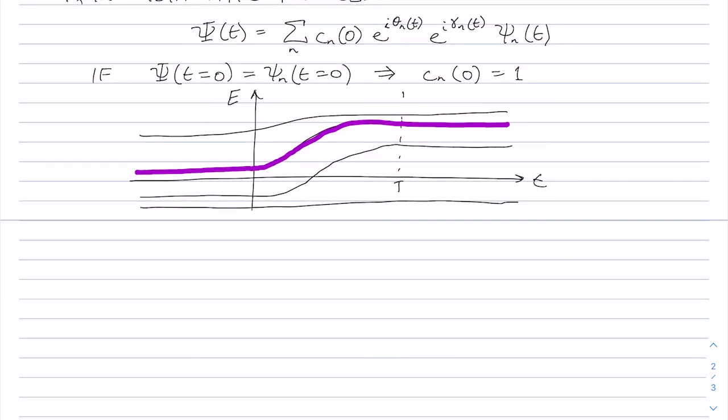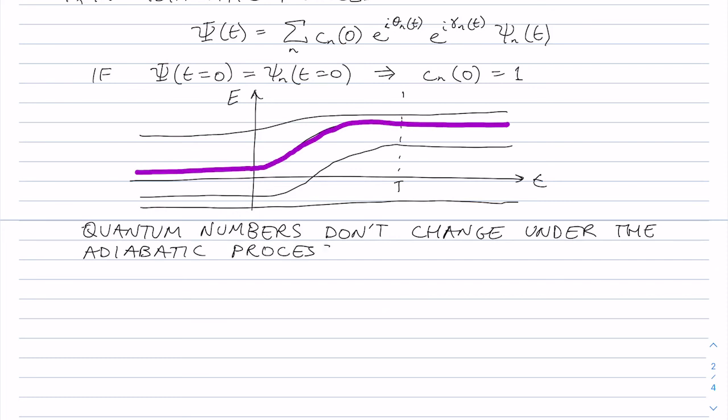We can say about this, that quantum numbers don't change under the adiabatic process. In other words, if you start off in the state with eigenvalue n, you'll end up in the state with eigenvalue n, even though the wave function corresponding to that quantum number has changed over time.